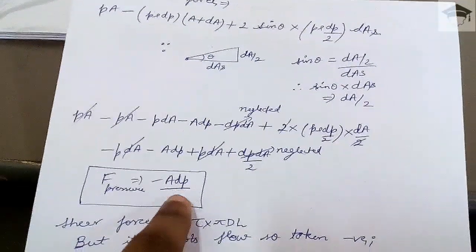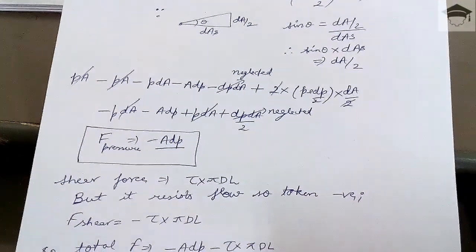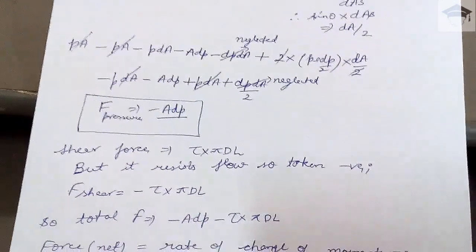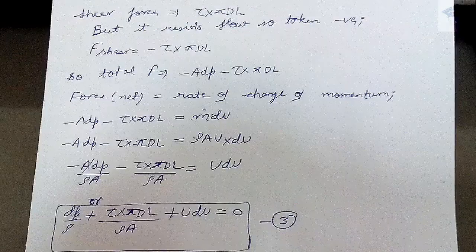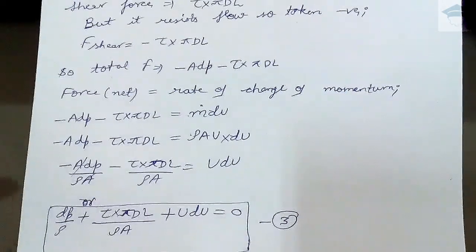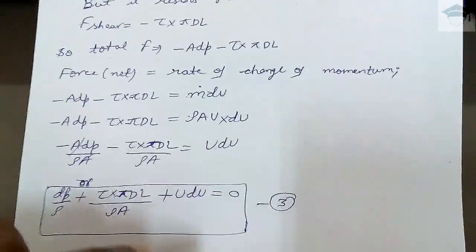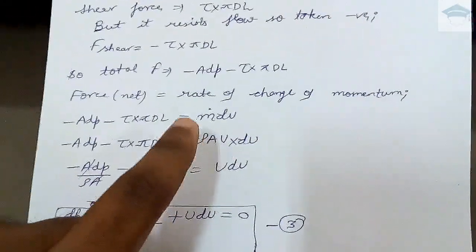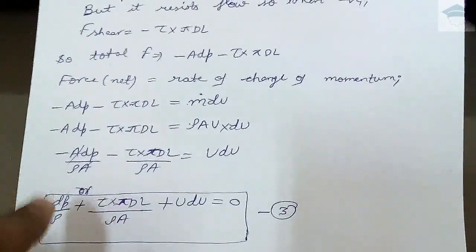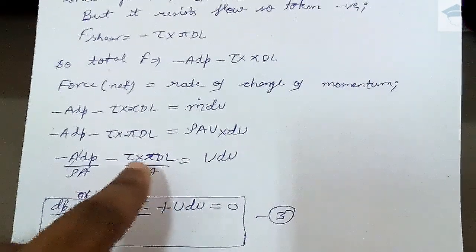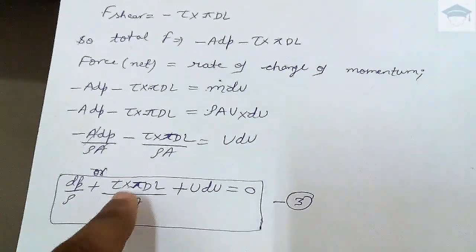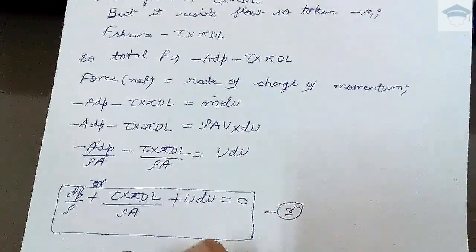The shear force is τ·π·dl, but since it resists the flow it is taken as negative: shear force = −τ·π·dl. So the total net external force is −A·dp − τ·π·dl. Setting this equal to the rate of change of momentum: −A·dp − τ·π·dl = ṁ·du = ρ·A·u·du. Dividing through by ρ·A gives: −dp/ρ − τ·π·dl/(ρ·A) = u·du, or rearranging: dp/ρ + τ·π·dl/(ρ·A) + u·du = 0. This is equation number three.